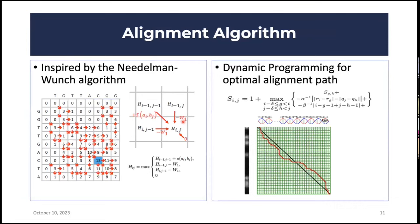Then we have the alignment algorithm, inspired by the Needleman-Wunsch algorithm used for sequence alignment in traditional genomics — a dynamic programming algorithm. I developed an alternative version for mapping between a DNA molecule image and a sequence, when we know which sequence patterns have been labeled. The equation defines the energy equation for the alignment path, and you can see an example alignment path solved between the two objects.